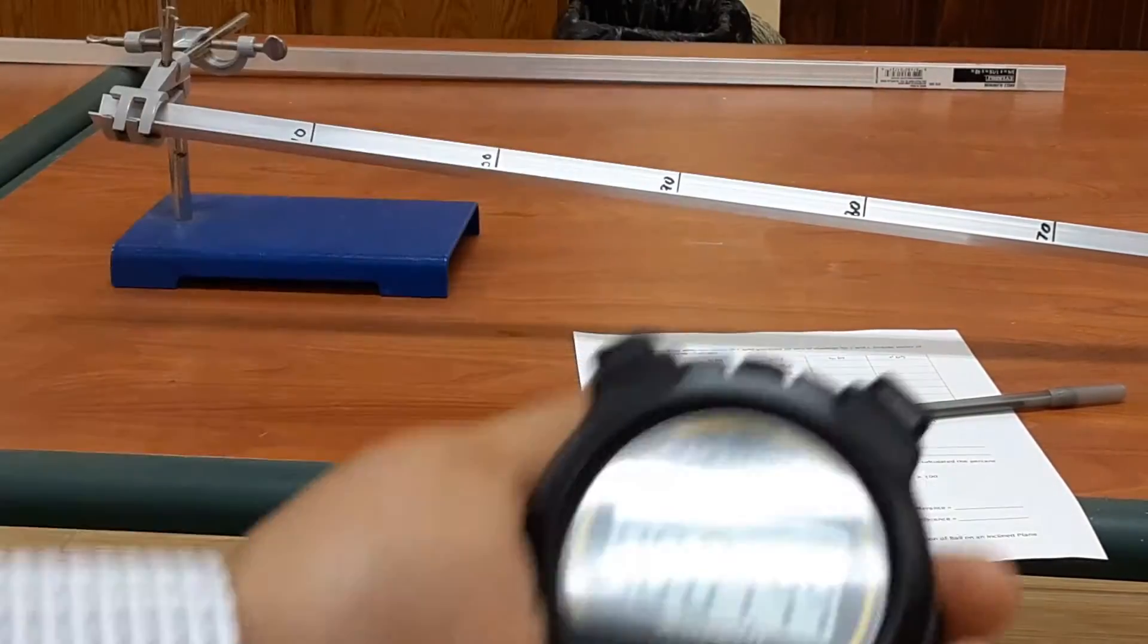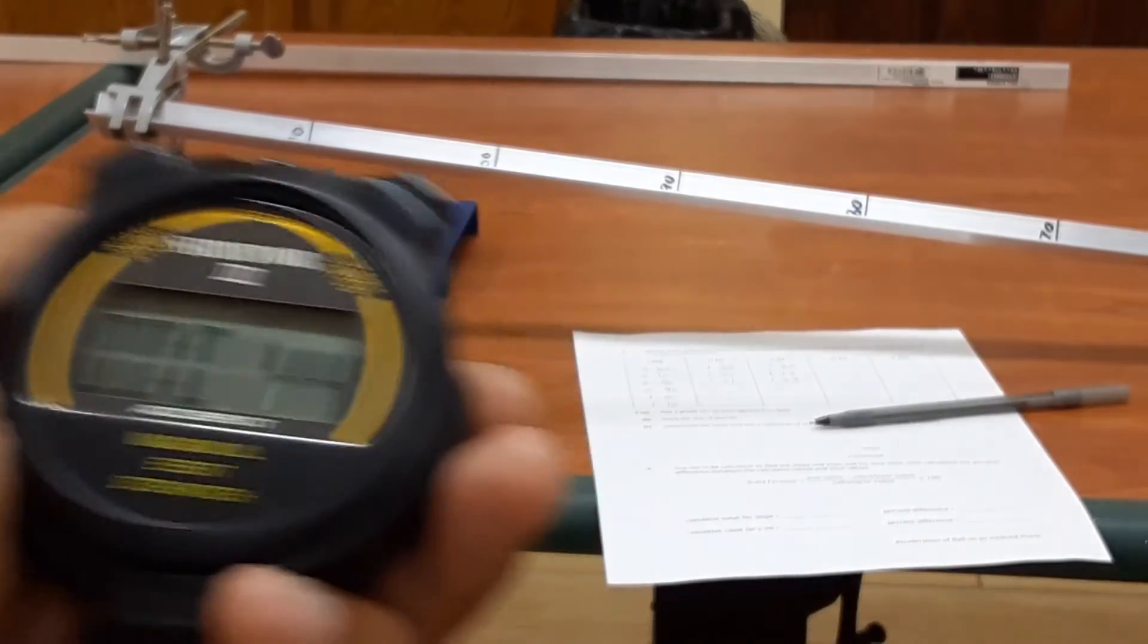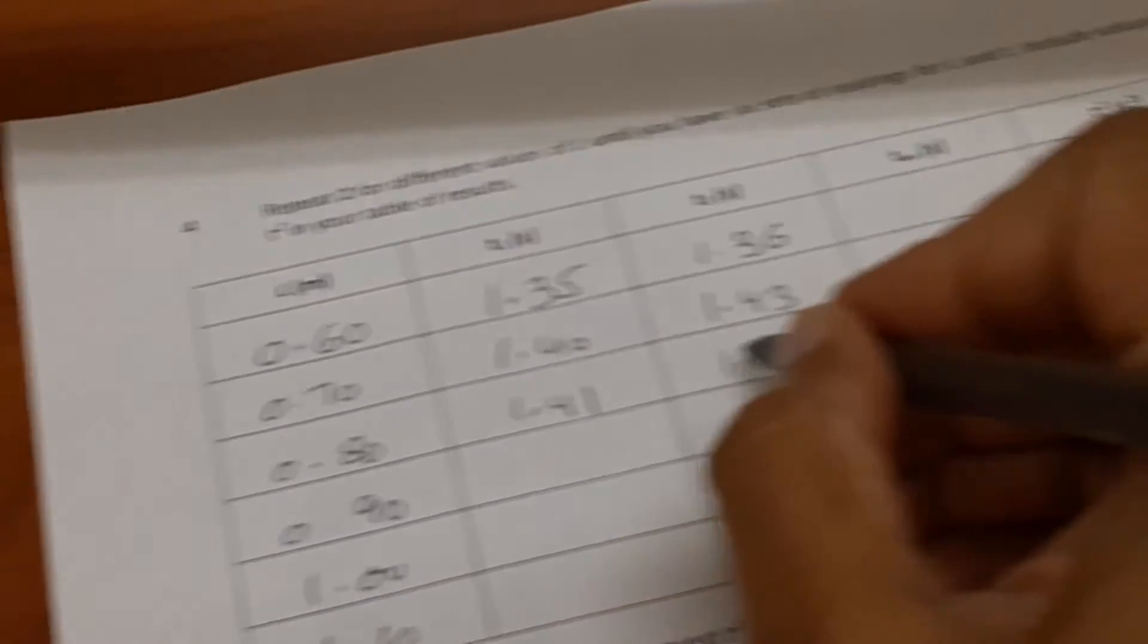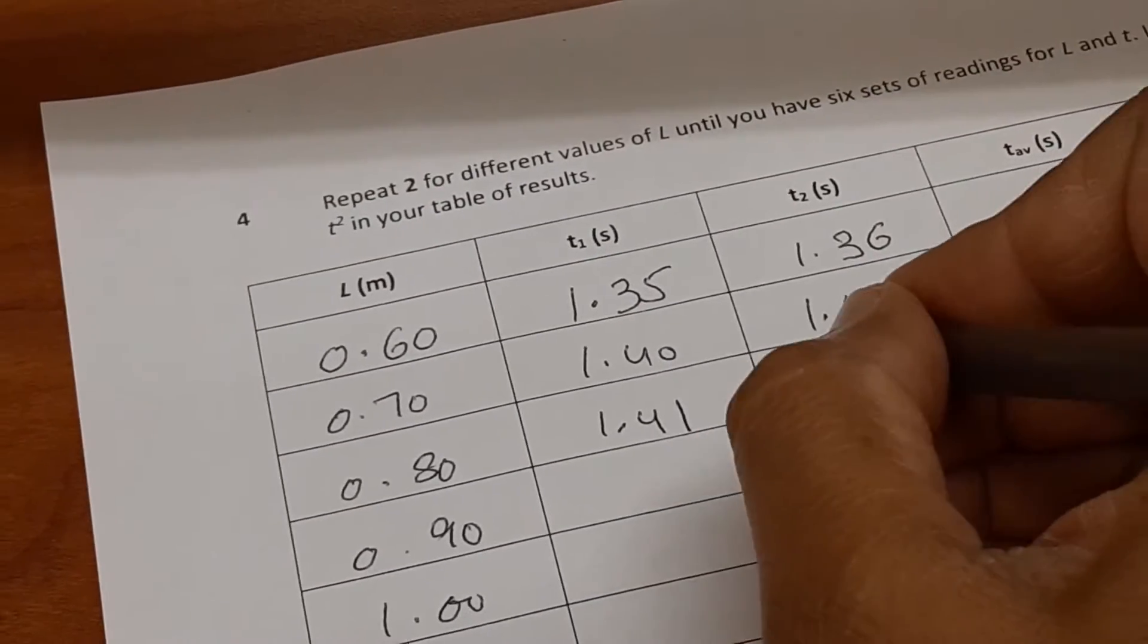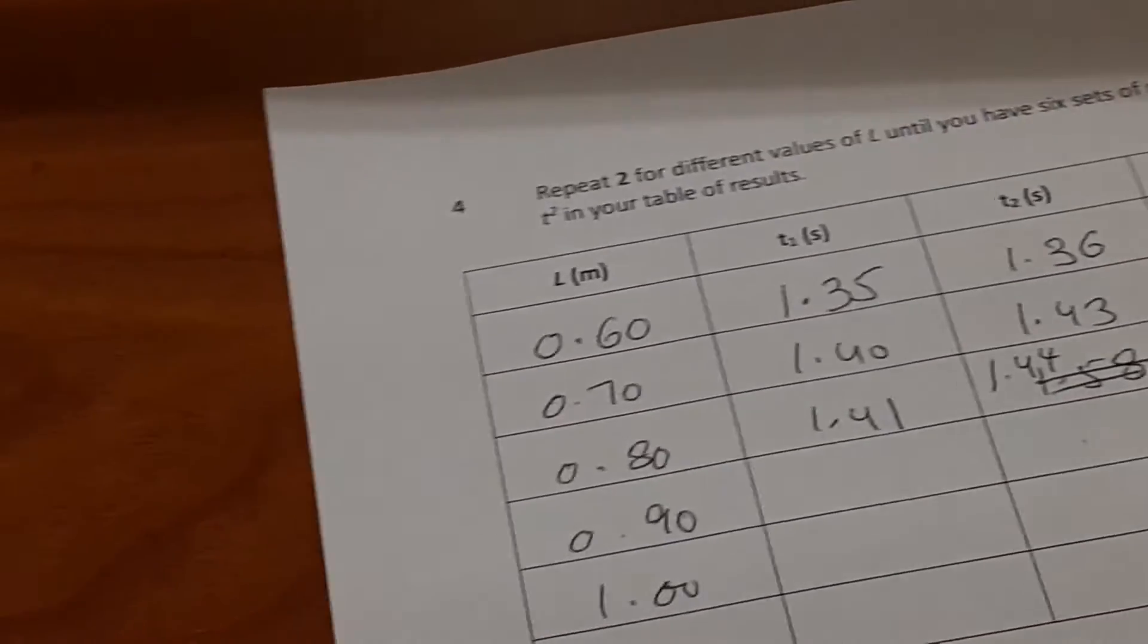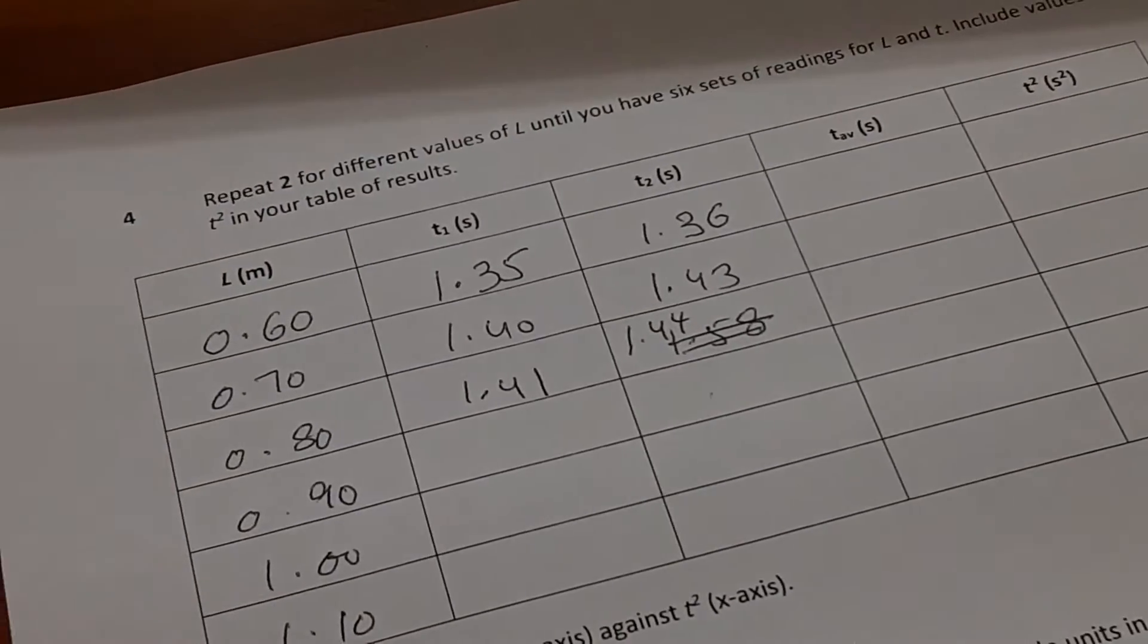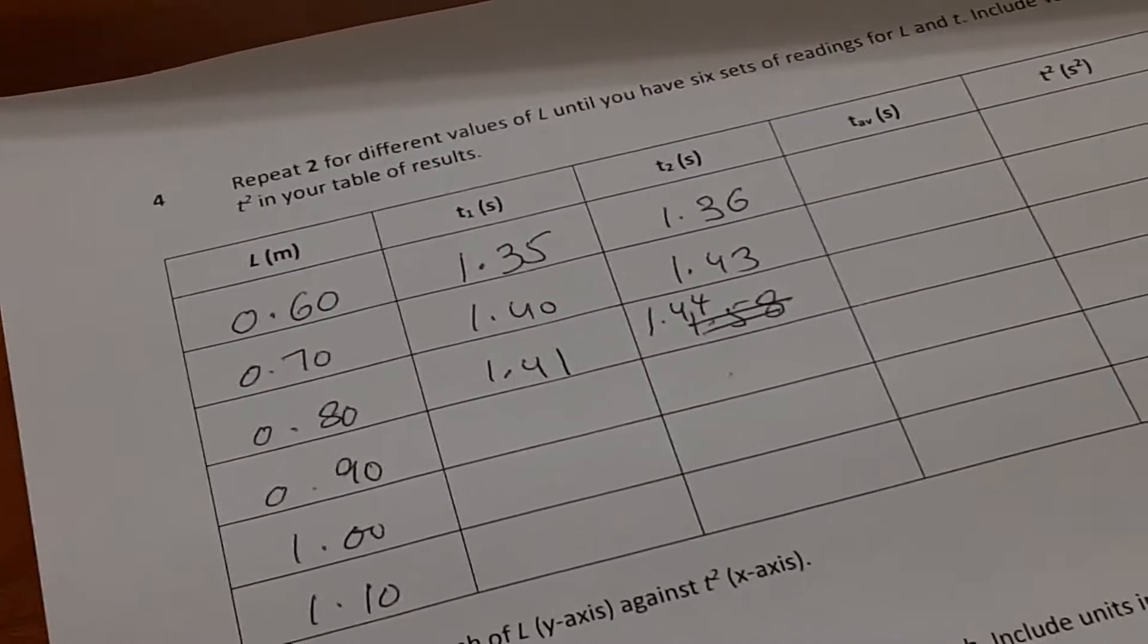And now I have a time of 1.44. So what I will do here is I will go to my table, and in my table, I will discard this value of 1.58 and I will replace it by 1.44. So all further calculations that I do will be based on this value of 1.44.